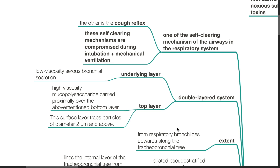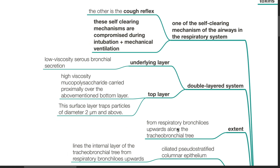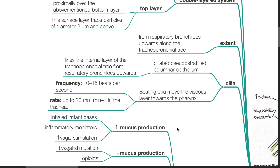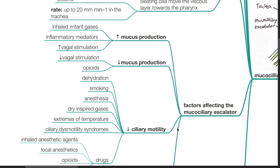The mucociliary escalator is a double-layered system. The underlying layer is a low-viscosity serous bronchial secretion. The top layer is a high-viscosity mucopolysaccharide carried proximally over the bottom layer. This surface layer traps particles of diameter 2 micrometers and above. It extends from the respiratory bronchioles upwards along the tracheobronchial tree. Cilia are present at the ciliated pseudo-stratified columnar epithelium lining the tracheobronchial tree from the respiratory bronchioles upwards. Beating cilia move the viscous layer towards the pharynx at a frequency of 10 to 15 beats per second at a rate of up to 20 mm per minute in the trachea.